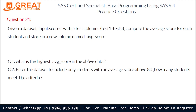Question number 21 says that there is a dataset named input.scores with five test columns, test one to test five. Compute the average score for each student and store it in a new column named average_score. The question asks: what is the highest average score in the data? And second, filter the dataset to include only students with an average score above 80 — how many students meet the criteria?